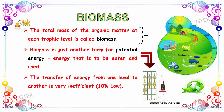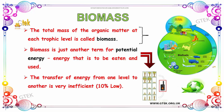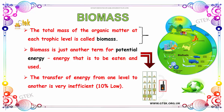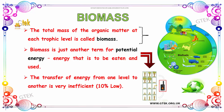Now we are going to discuss about biomass. The total mass of organic matter at each trophic level is called biomass, shown here. Biomass is just another type of potential energy — that means the energy that is to be eaten or used. The transfer of energy from one level to another is very inefficient; from one level to another, the energy percentage is low, as you can see here.